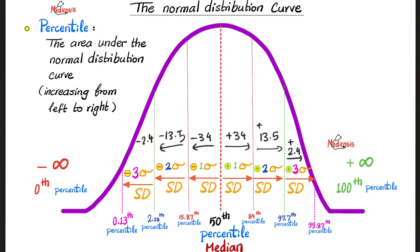So again: the 50th percentile is the median. One standard deviation above the mean is the 84th percentile. One standard deviation below the mean is the 16th percentile, approximately. Two standard deviations above the mean is the 97.5th percentile. Two standard deviations below the mean is the 2.5th percentile. Three standard deviations above the mean: 99.9th percentile. Three standard deviations below the mean: 0.1st percentile. Technically, the normal distribution curve starts at negative infinity and ends at positive infinity. Therefore, the 0th percentile is negative infinity, whereas positive infinity is the 100th percentile.